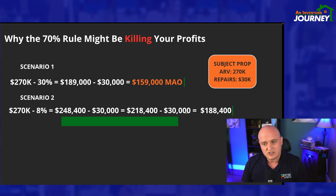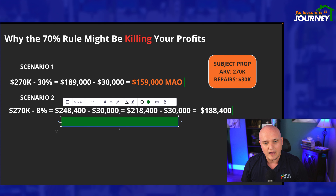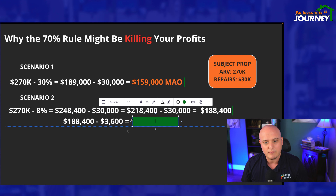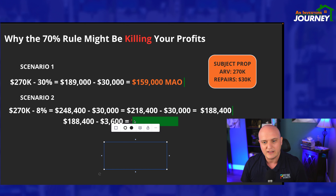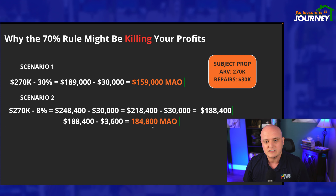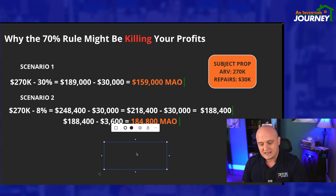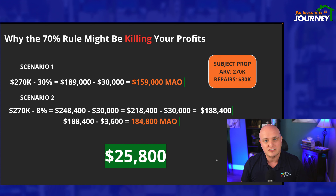So just on these numbers alone, we're at $188,400. Now let's take that number and subtract our holding costs, because we borrow money from private individuals who lend us money at 8–10% interest. Let's assume this deal is going to take about three months — which for a $30,000 rehab is around that timeframe. So our maximum allowable offer in this scenario comes out to $184,800. That is a $25,800 difference from the number in scenario one.